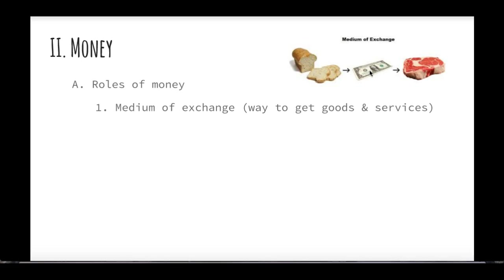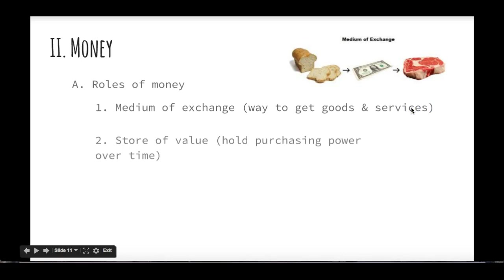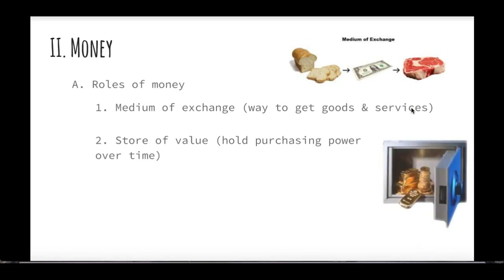If we wanted to change our type of money, it would have to be something that everyone agreed on — it couldn't just be some random thing. The second role of money is it has to have a store of value, meaning that if I go and put this in a vault someplace and lock it up for 30 years, can I go take it out in 30 years and be able to use it?